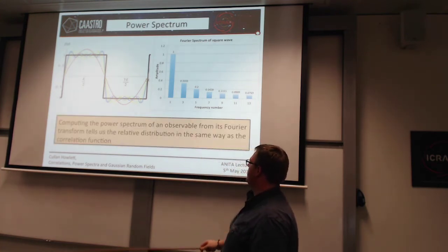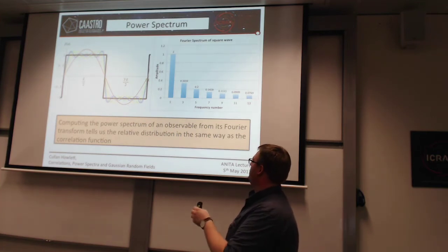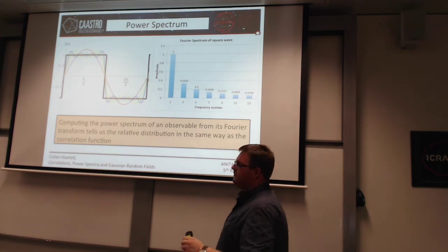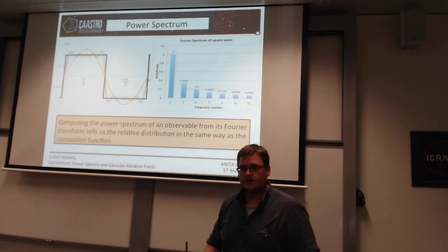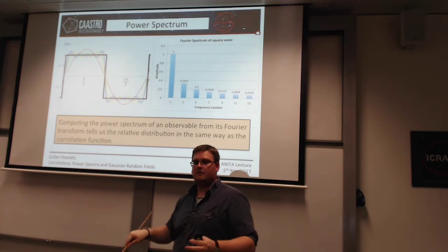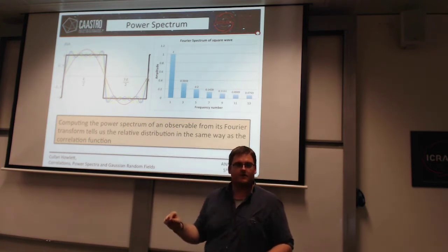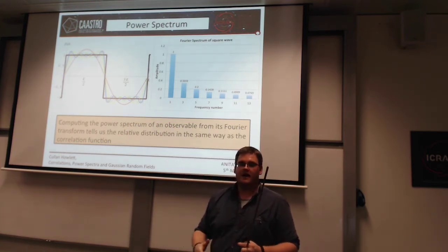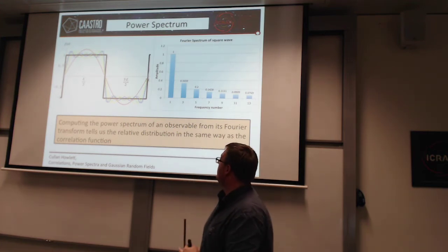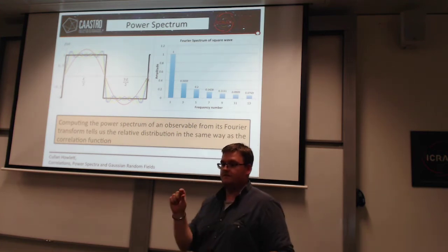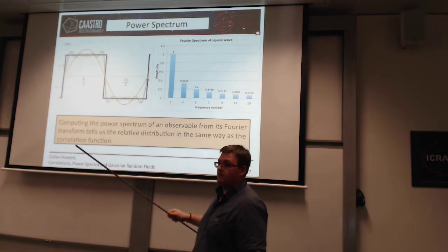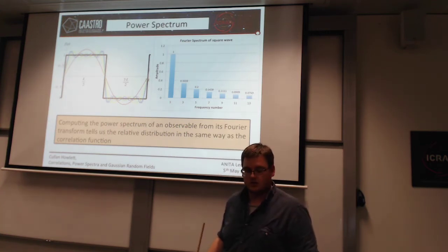Computing the power spectrum of an observable from its Fourier transform tells us the relative distribution in the same way as the correlation function. Basically, I've taken my observable and split it into different Fourier modes. If I've got lots of points separated by a very small distance, the frequency between those is very high, so I have lots of power at high frequencies. If I've got correlations between two things on very large scales, that's a long wavelength mode, meaning I have a lot of power at low frequencies.